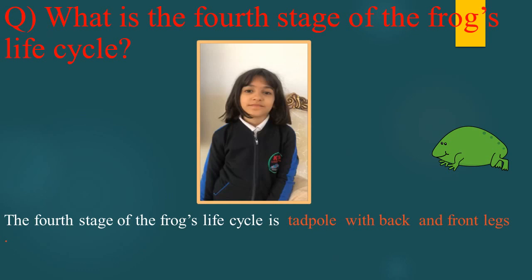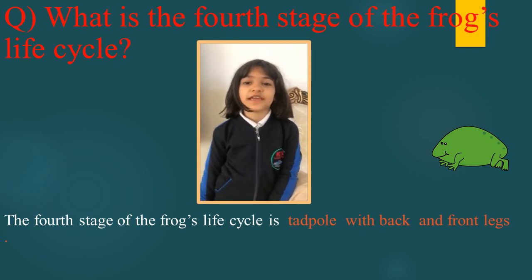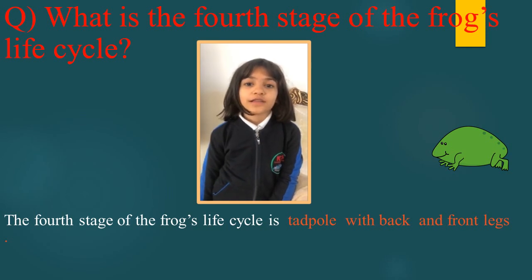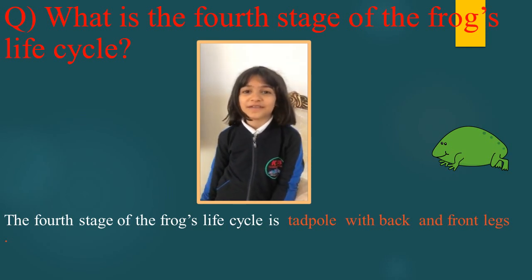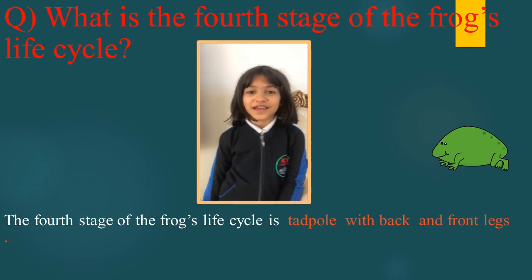What is the fourth stage of the frog's life cycle? The fourth stage of the frog's life cycle is tadpole with back and front legs. Very good.